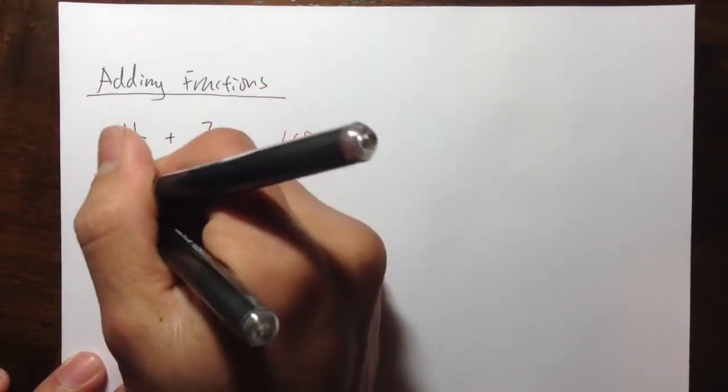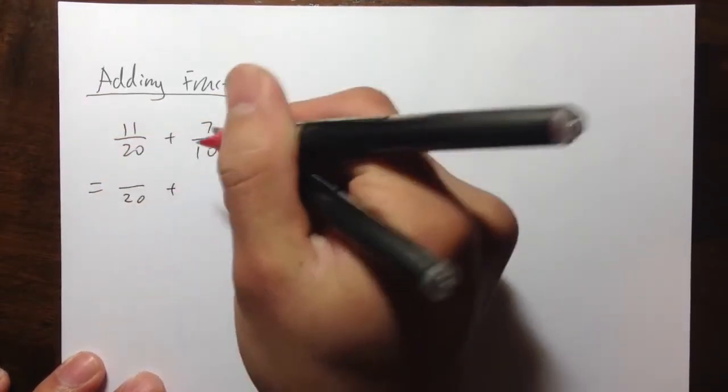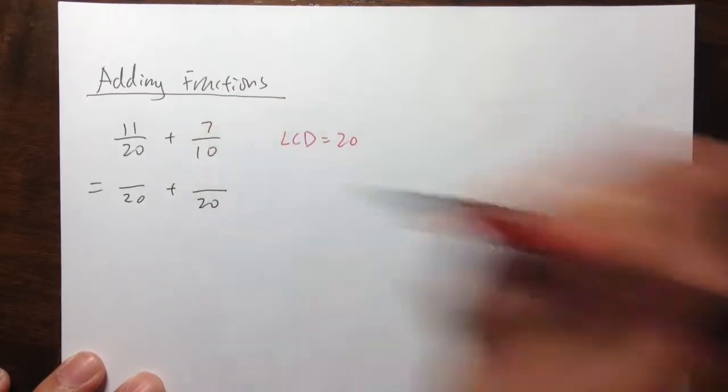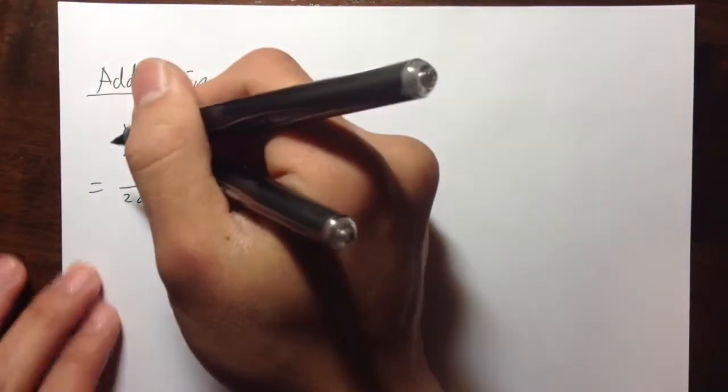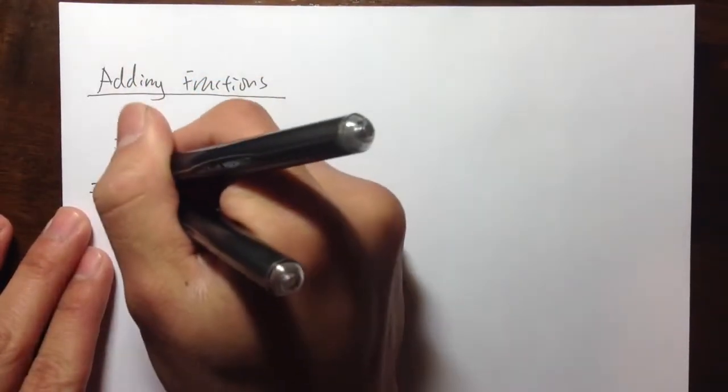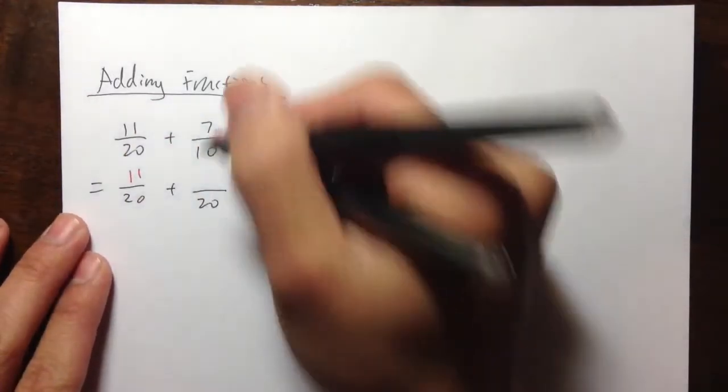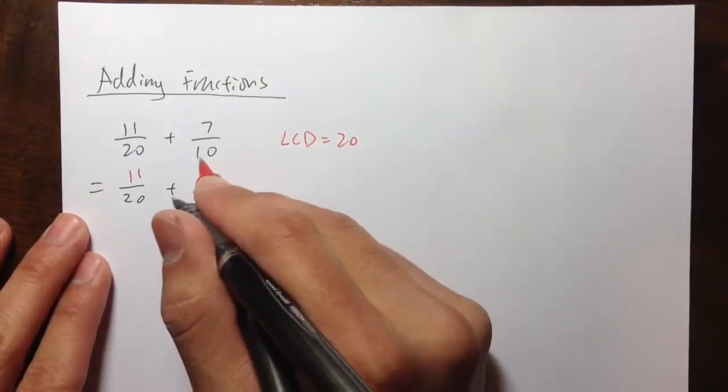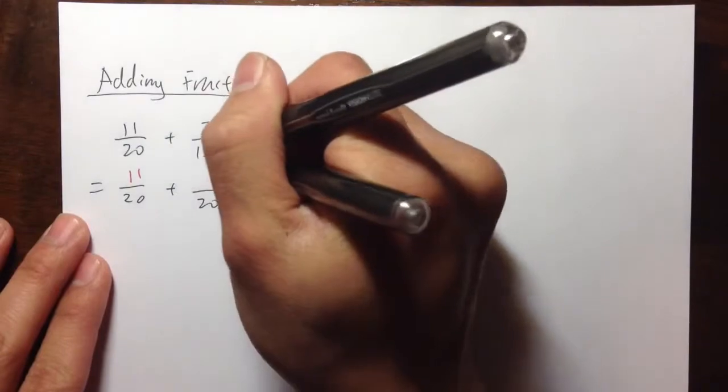That means I will need to change the first fraction to something over 20 plus the second fraction the same, something over 20. But for the first fraction, it's already 11 over 20, so I just need to put the element down right here. But for the second fraction, we all have to think about 10 times 4 will be 20, 10 times 2 will be 20.